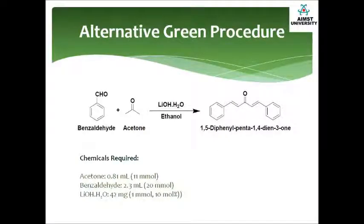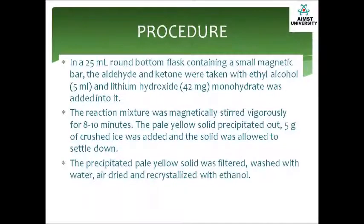Now let us see another alternative green procedure for the synthesis of diphenylpenta-1,4-dien-3-one. The chemicals required are acetone, benzaldehyde, and lithium hydroxide. In a round-bottom flask, take the aldehyde and ketone along with ethyl alcohol, then add lithium hydroxide monohydrate. The reaction mixture is magnetically stirred vigorously for 8 to 10 minutes. A pale yellow solid will precipitate out.